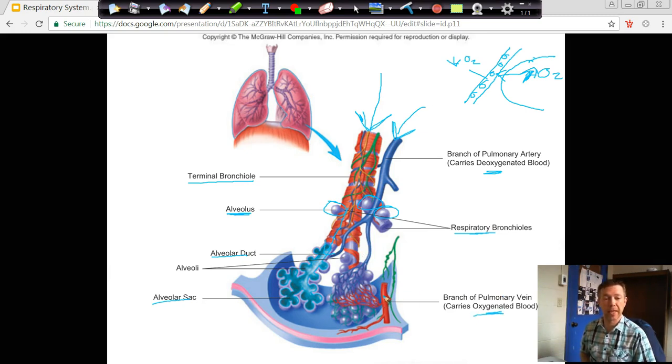The oxygenated blood moves from the capillaries into venules and veins. The pulmonary veins bring oxygenated blood back to the left side of our heart to be pumped out by the systemic circuit. So that is the very basics of our respiratory tract and a very simple piece on gas exchange.